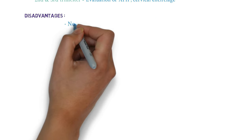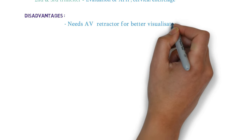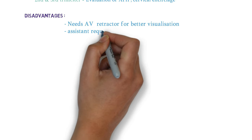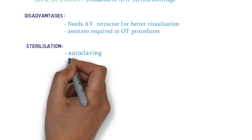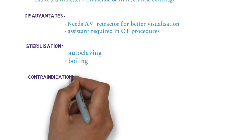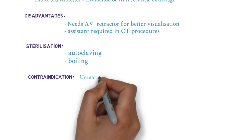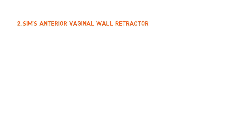The disadvantages are: it needs an AV retractor for better visualization, and assistance is required in OT procedures. Sterilization is by autoclaving and boiling. The contraindication is that if the female is unmarried, we cannot use this instrument. This is also an MCQ in your PG preparation. This is all about the Sims speculum.